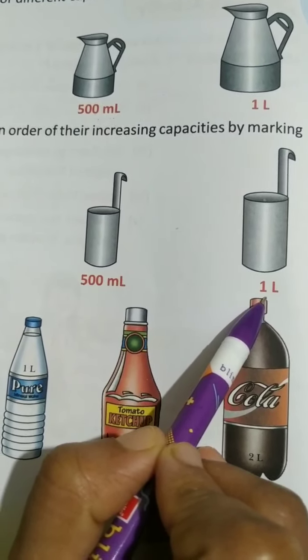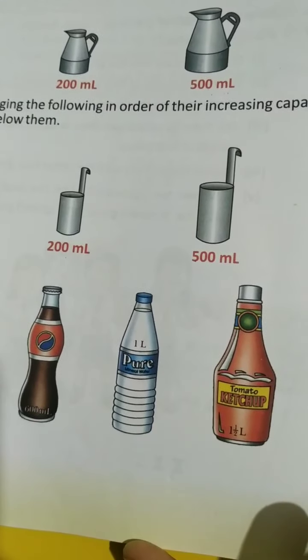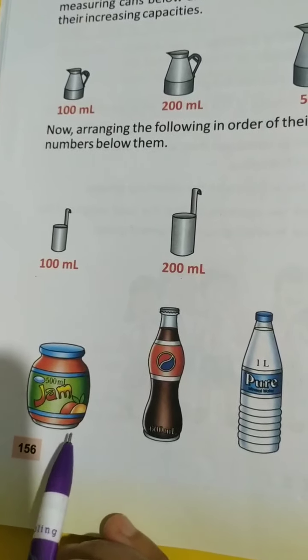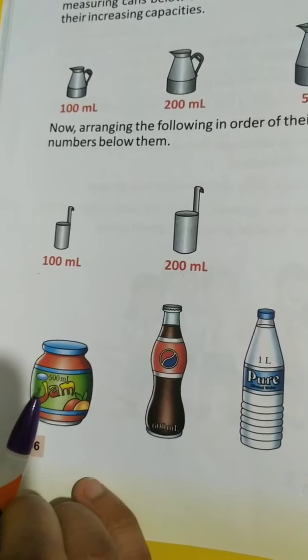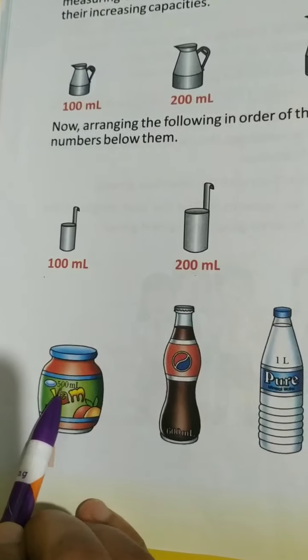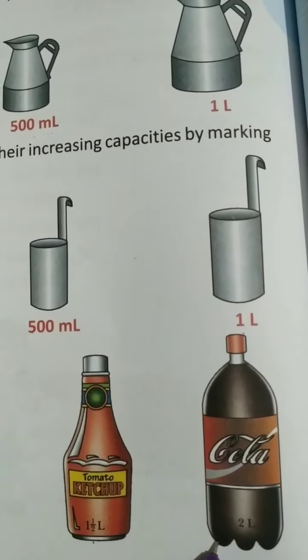In your daily life you use many liquids that come in bottles, and on those bottles you can see the amount of liquid. For example: a jam bottle has 500 ml, a cold drink bottle has 600 ml, a water bottle is 1 liter, ketchup is also 1 liter, and a large cold drink bottle is 2 liters.